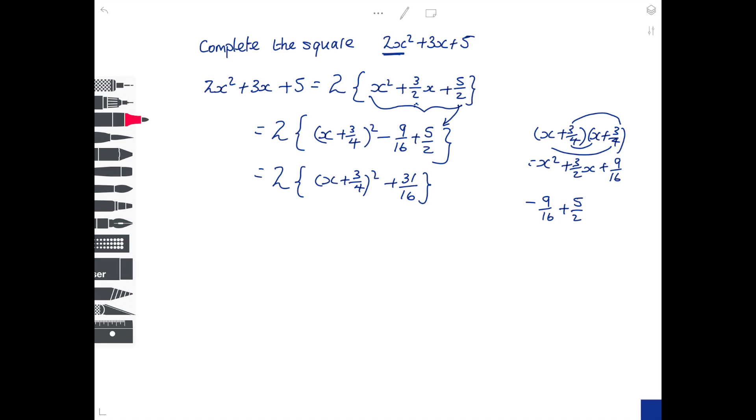You need both denominators to be the same, so I'm going to multiply top and bottom here by 8. So it's minus 9 over 16 plus 40 over 16, which gives me 31 over 16.